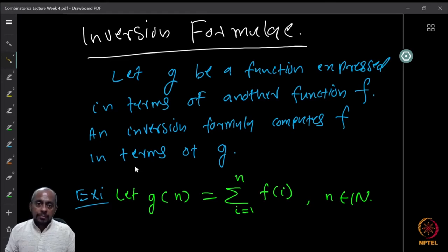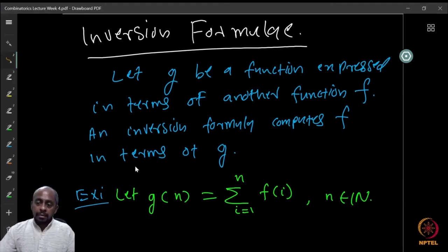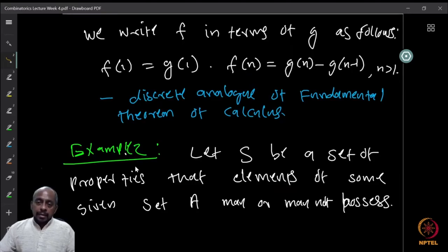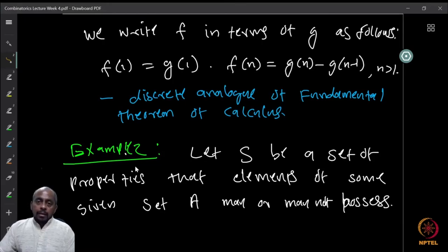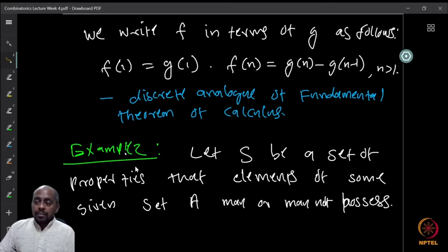Now the question is: can you recover f given g? If you know g, can you recover f? This is something you can find very easily. You can see that f can be written in terms of g as follows: f(1) is g(1), which is clear from the summation. Then f(n) can be written as g(n) minus g(n−1). This can be verified immediately from the previous definition of g in terms of f.